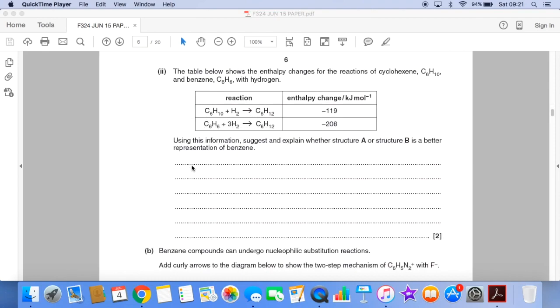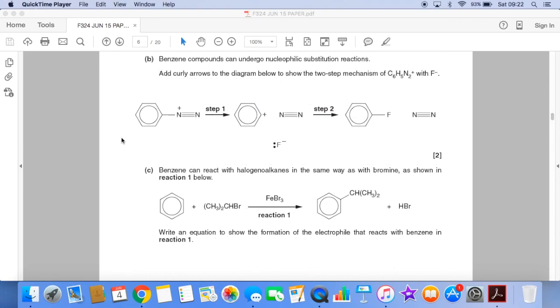We've now got a table of enthalpy changes for the reactions of cyclohexene and benzene with hydrogen. And using the information, we have to suggest and explain which of those two structures, A and B, is a better representation of benzene. Part B is an application of what you'll have covered in class with regards to benzene and its electrophilic substitution reactions.